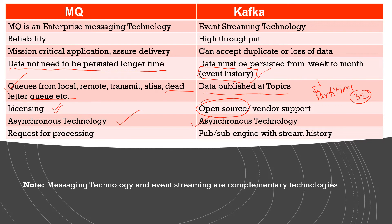Kafka is more suited for a pub-sub model, where one publisher sends data and a number of consumers are looking for historic data using the pub-sub model. If you look closely, these two technologies are very much complementary to each other — they complement, not compete. In an organization, both technologies can sit side by side and serve their purpose.